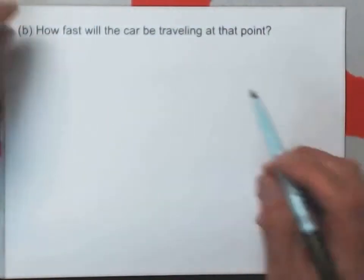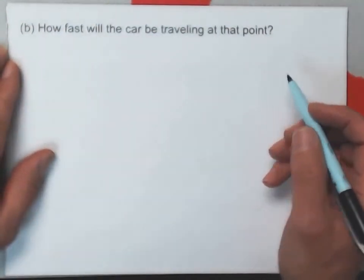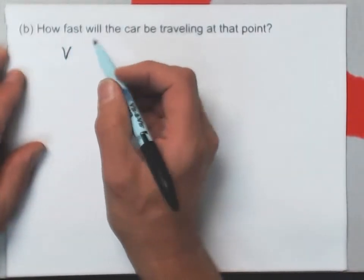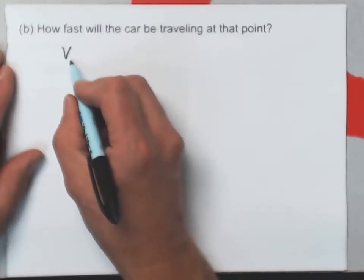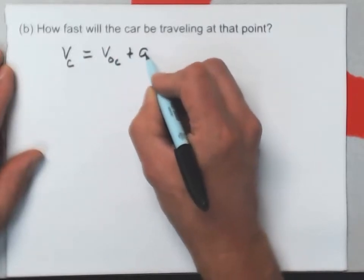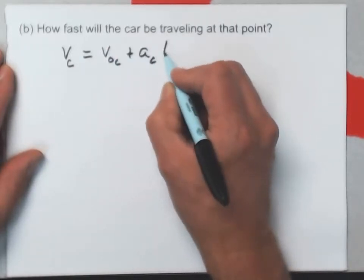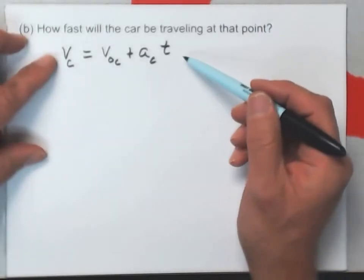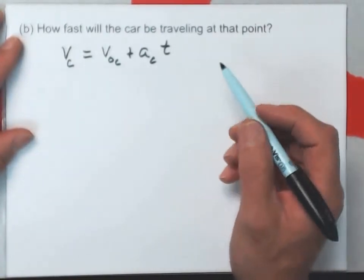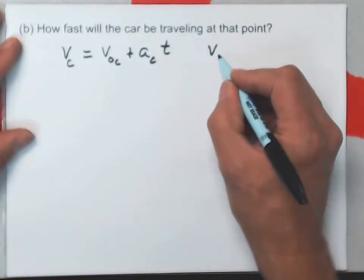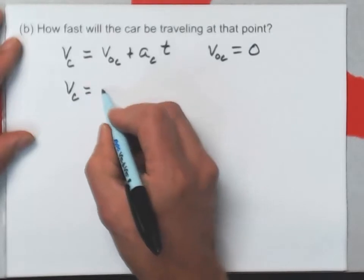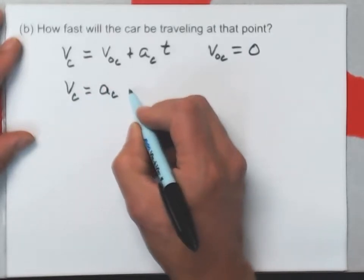The last question is, how fast will the car be traveling at this point? Well, let's see. We haven't written this down yet, but in general when you have constant acceleration, the velocity of the car would be v-naught for the car plus acceleration of the car times T. This looks pretty much like our most general equation except I've got these little C's on here because it's the velocity of the car. Now, the car started from rest, so that's zero. So this is just the velocity of the car is the acceleration of the car times T.